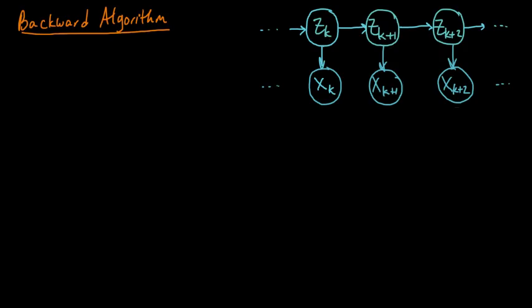The backward algorithm for the hidden Markov model is very similar to the forward algorithm. For the forward algorithm, we computed those alpha quantities from alpha 1 to alpha 2, alpha 3, and so on up to n — going in the forward direction. For the backward algorithm, we're going to go backward, computing values starting at n, then n minus 1, and so on back to 1.